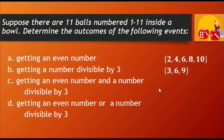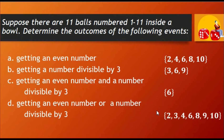While for event C, the outcome is 6 because 6 is the only even number from 1 to 11 that is also a multiple of 3. And lastly, for event D, the outcomes are 2, 3, 4, 6, 8, 9, and 10 because they are the numbers that are either even or divisible by 3.